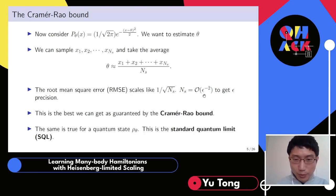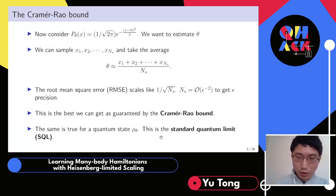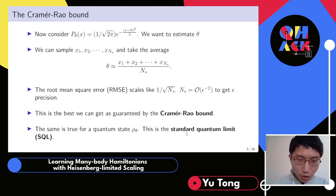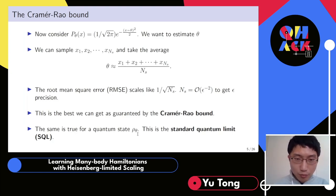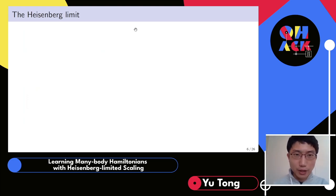This result extends to the quantum setting, where we have a quantum state rho-theta and want to estimate theta from many copies. This is called the standard quantum limit: to estimate theta to precision epsilon you need epsilon-to-the-minus-two many copies. But sometimes when estimating things in the quantum world, we can go beyond the standard quantum limit using quantum coherence.